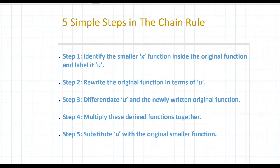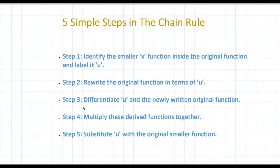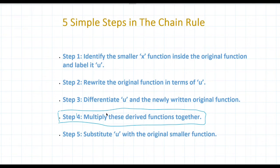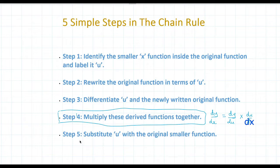Step one is identify the smaller x function inside the original function and label it u. Step two is rewrite the original function in terms of u. Step three is differentiate u and the newly written original function. Step four, multiply these derived functions together — this is what you see in the chain rule formula, which tells you that dy/dx is given by dy/du multiplied by du/dx. And step five is substitute u with the original smaller function in your answer.